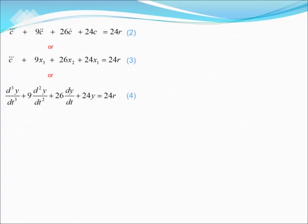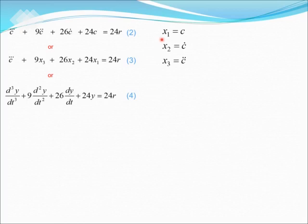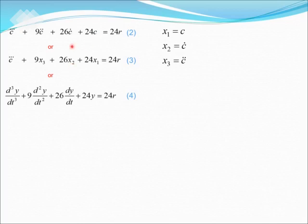In this slide, we are going to make use of equations 2, 3, and 4 from the previous slide. We are going to select the state variables. Choosing the state variables as successive derivatives, we get x1, x2, and x3. Since we have a transfer function with a third order system, we need three state variables. x1 is equal to c, x2 equals to c prime, and x3 equals to c double prime.